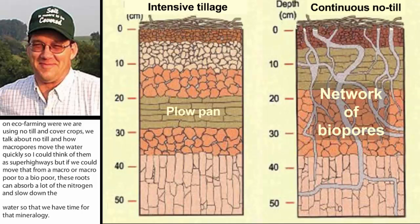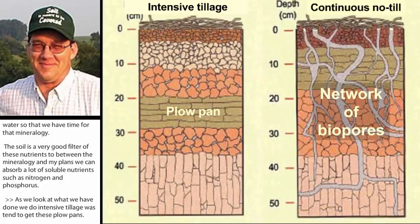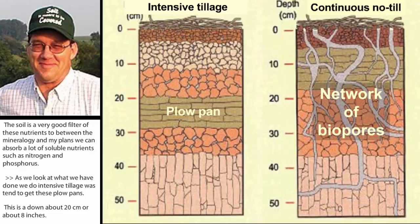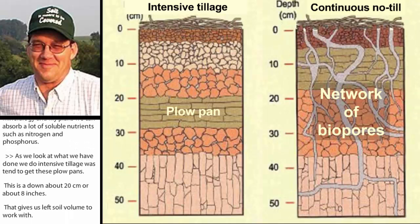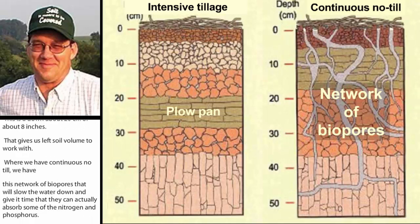When we do intensive tillage, we tend to get hard pans or a plow pan — going down 20 centimeters, or about eight inches — which gives us less soil volume to work with. Where we have continuous no-till, and my goal is to have continuous living cover, we have this network of biopores that will slow water down and give it time to absorb nitrogen and phosphorus. It's about retention time: the longer we retain water in the soil, the better we can absorb those nutrients.